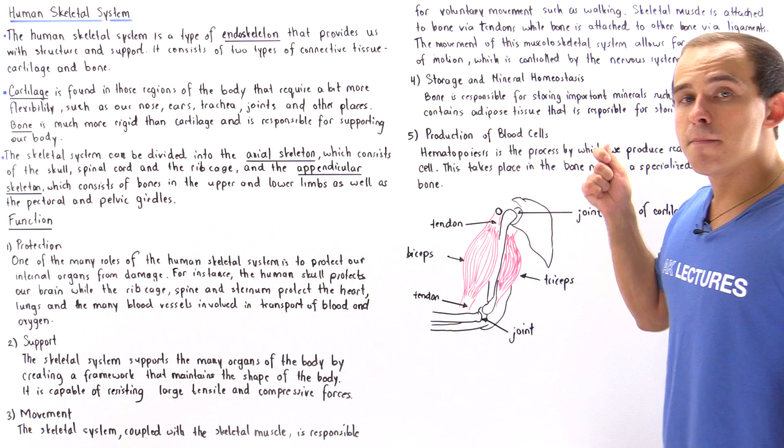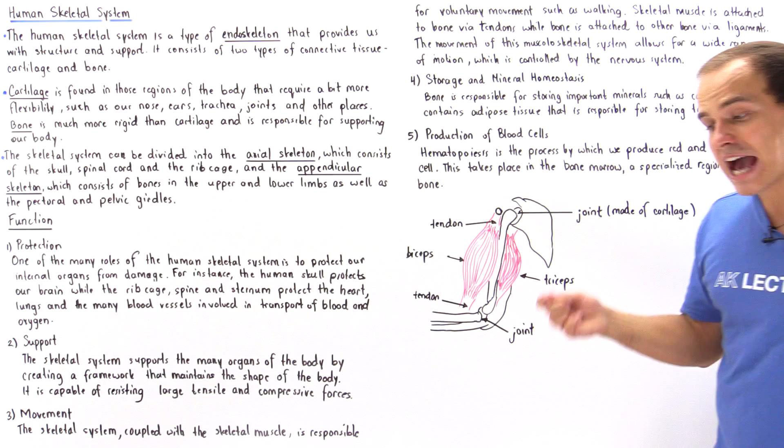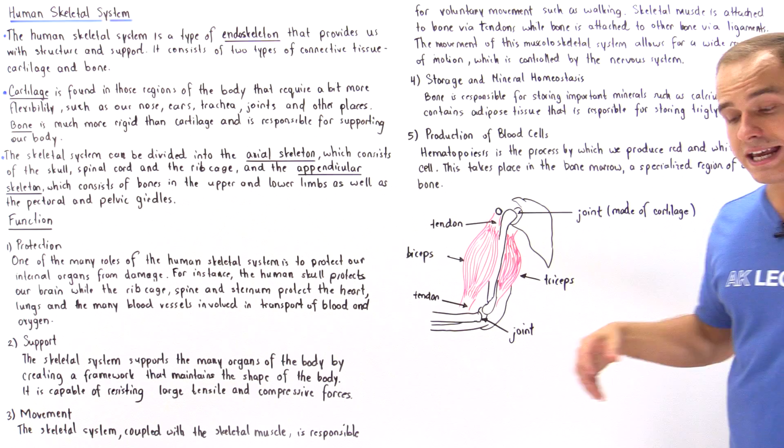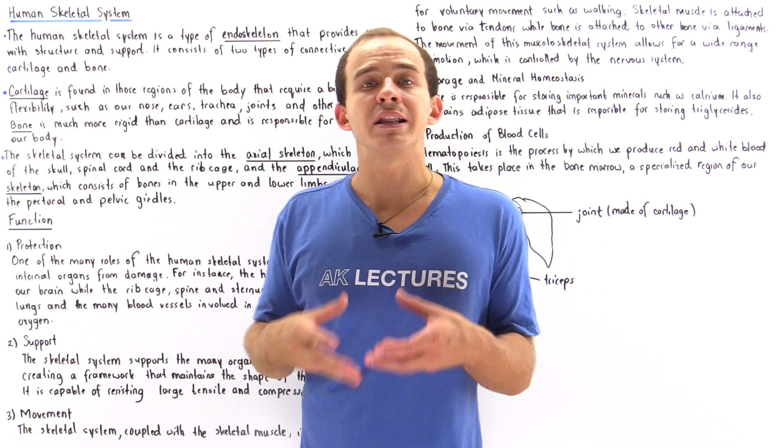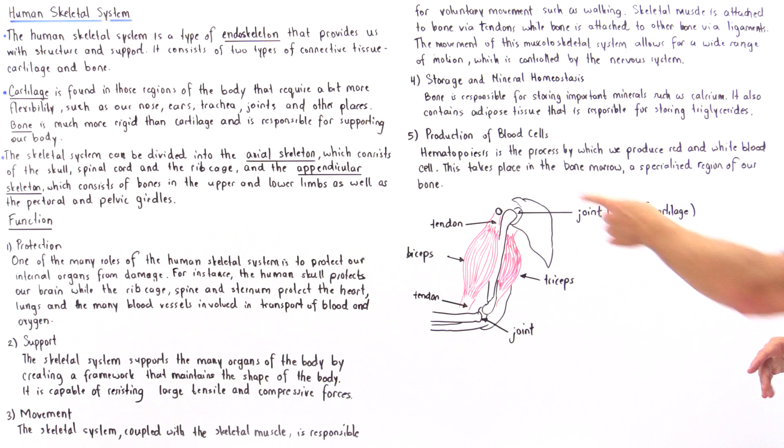When the blood levels, if we find too much calcium in the blood, the bone is responsible for taking that calcium out of the blood and depositing the calcium into the bone. But if the blood level of calcium is low, that basically means the bone can actually release calcium into the blood, and then the calcium can go to the cell that requires that calcium. Remember, calcium is important, for example, in muscle contraction. If our muscle cells are low in calcium, the bone can basically release calcium into the blood that will eventually travel to those muscle cells. So bone is responsible for storing important minerals such as calcium, and it also contains adipose tissue that is responsible for storing triglycerides.